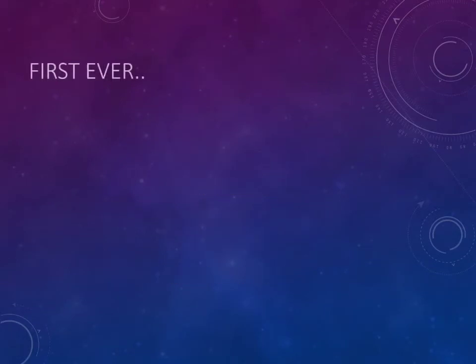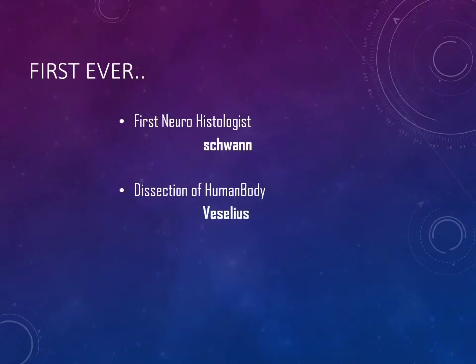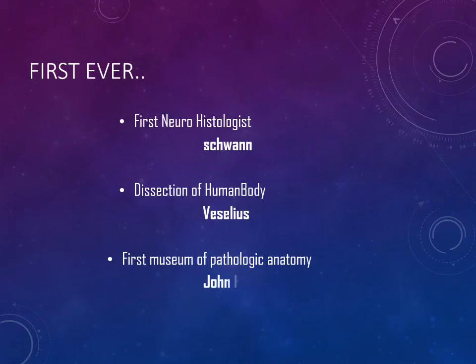Now we can learn the firsts in pathology history. First neurohistologist: Schwann. Dissection of the human body was done by Vesalius. The first Museum of Pathologic Anatomy was established by John Hunter.